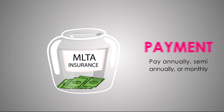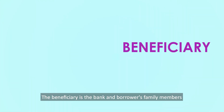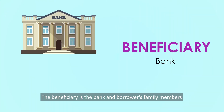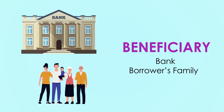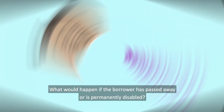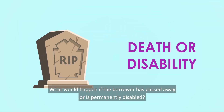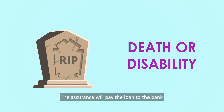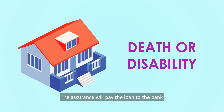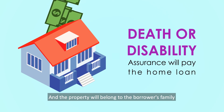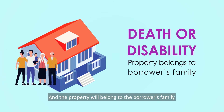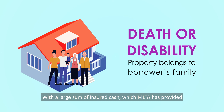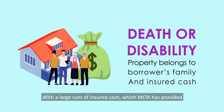The beneficiary of MLTA is both the bank and the borrower's family members. And just like MRTA, if the borrower has passed away or is permanently disabled, the assurance will pay the loan to the bank and the property will belong to the borrower's family, along with a large sum of insured cash which MLTA has provided.